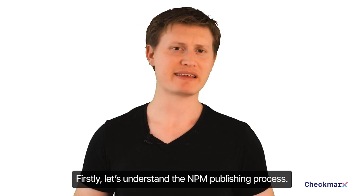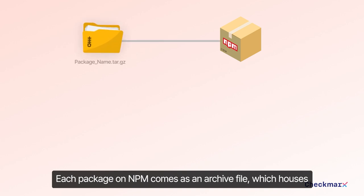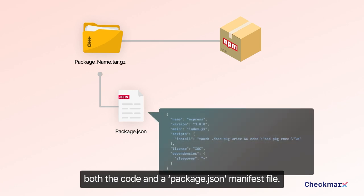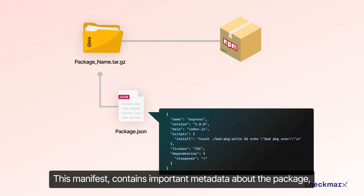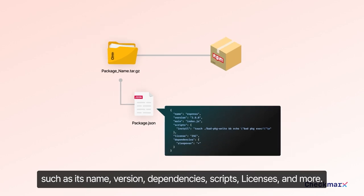Let's understand the NPM publishing process. Each package on NPM comes as an archive file, which houses both the code and a package.json manifest file. The manifest contains important metadata about the package, such as its name, version, dependencies, scripts, licenses, and more.